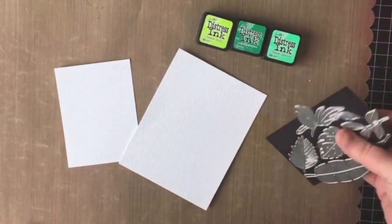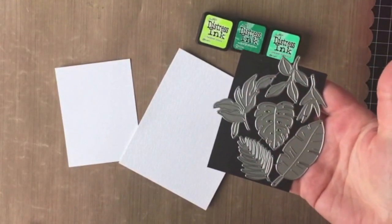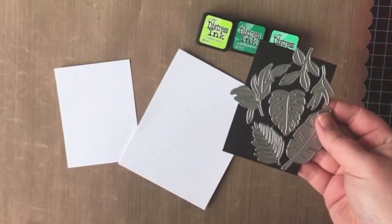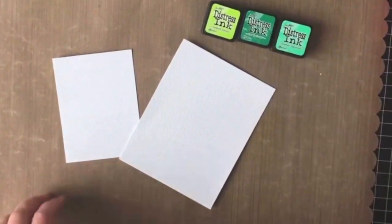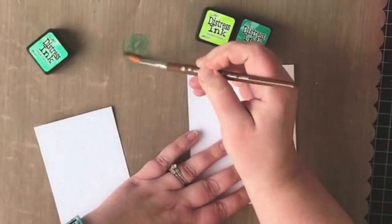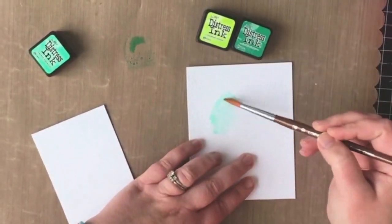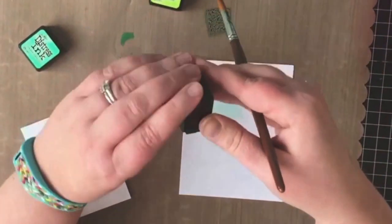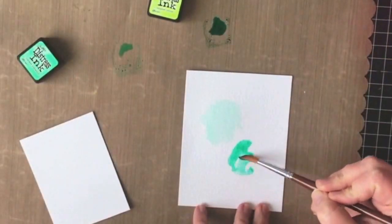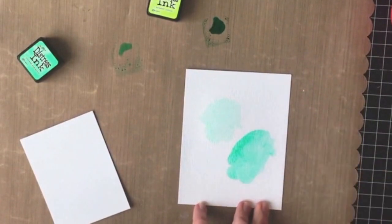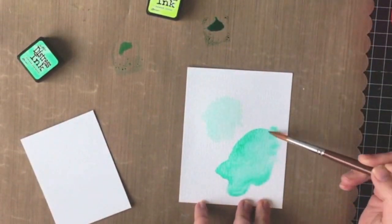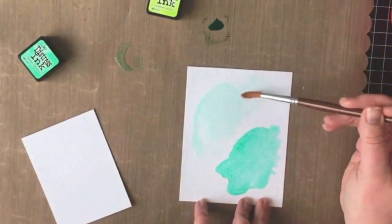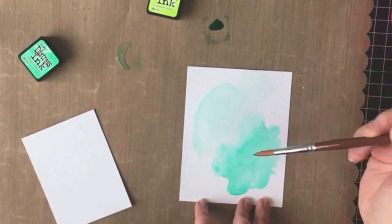To start I want to create a background that I'm going to use to die cut these greenery leaves and fronds. I've pulled out a couple pieces of distress watercolor cardstock and some distress ink. I'm using cracked pistachio, twisted citron, and lucky clover and I'm just starting by adding a base layer of color to the cardstock using a few different shades of the distress ink.